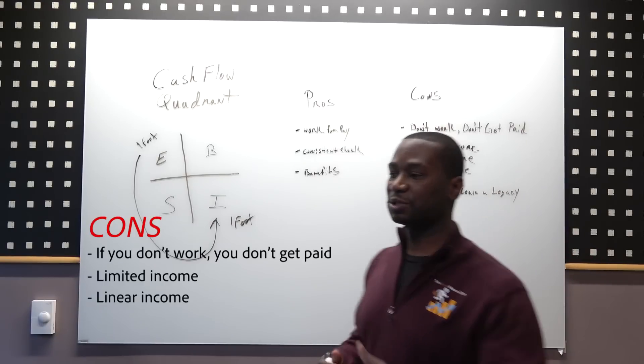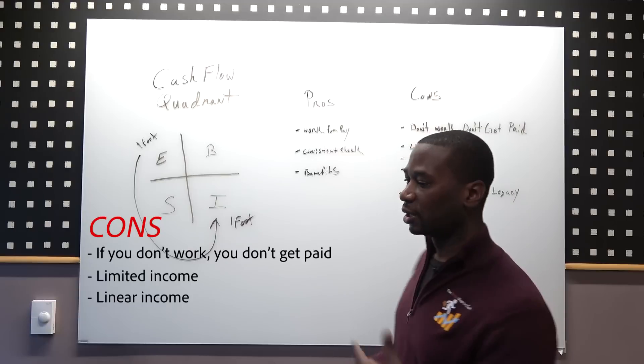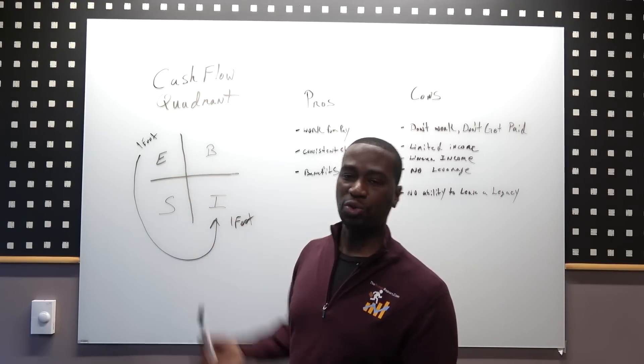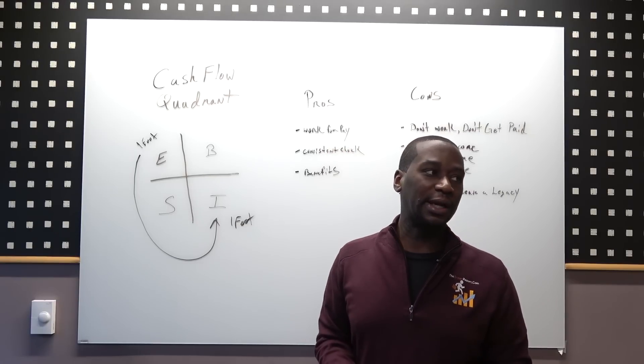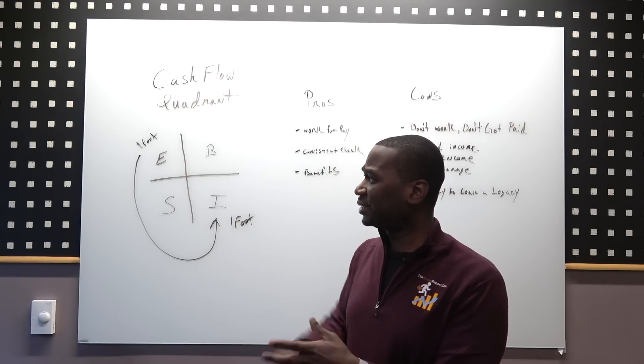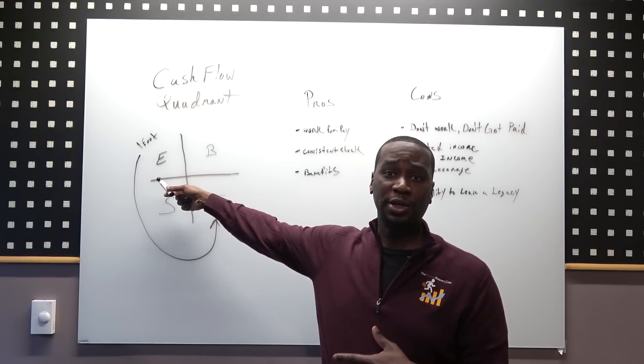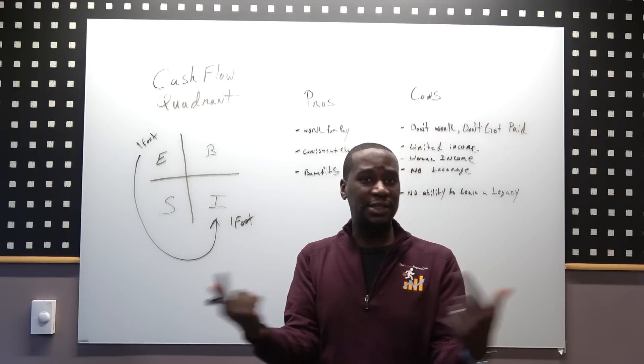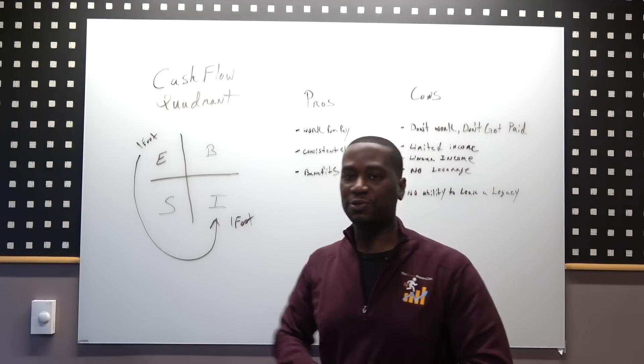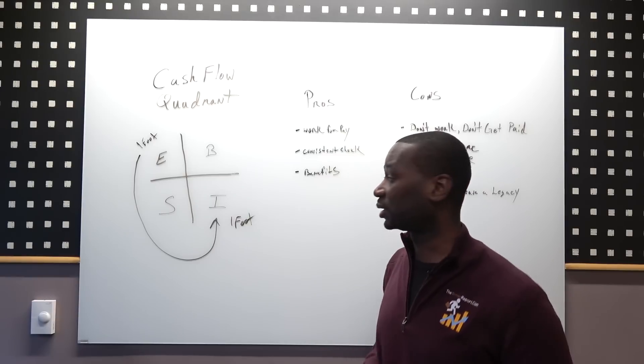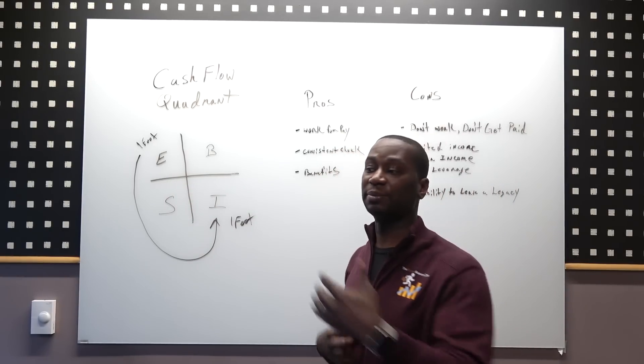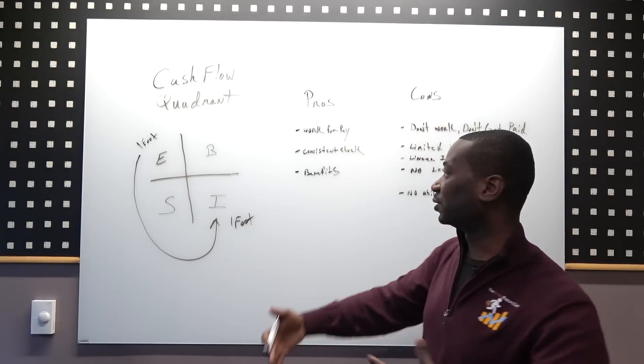Linear income means you work, you get paid. You're trading time for dollars. The other problem is these are the people that say 'I don't get to go to the soccer games, I'm not at home with my kid, I got to drop them off at daycare.' Typically the marriages are worse here because the parents are passing each other - you take the kids, I got to go to work. You don't even have time to talk to each other.